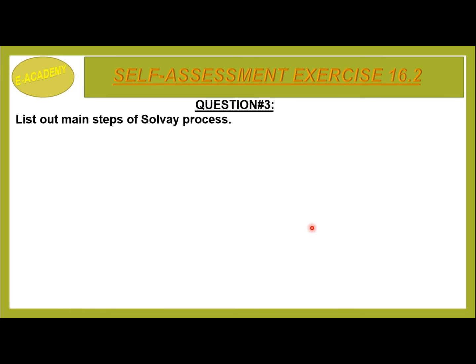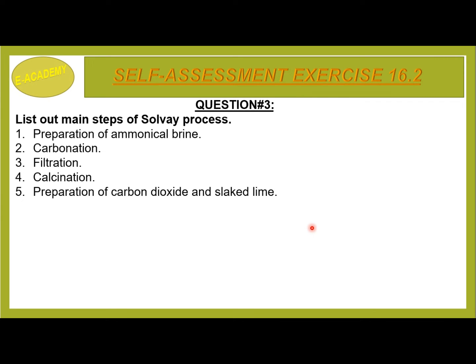Question No. 3: List out main steps of the Solvay process. The steps are: preparation of ammonical brine, carbonation, filtration, calcination, preparation of carbon dioxide and slaked lime, and recovery of ammonia. These are the main steps of the Solvay process.